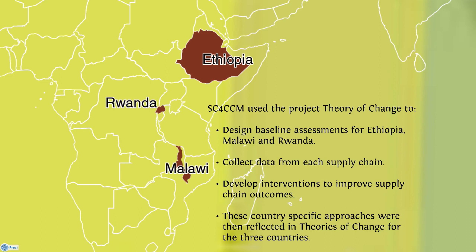SC4CCM used the project theory of change to design baseline assessments for Ethiopia, Malawi, and Rwanda, collect data from each supply chain, and develop interventions to improve supply chain outcomes. These country-specific approaches were then reflected in theories of change for the three countries. While all the theories of change aim to achieve the same objective, the country-specific ones have variations in steps that constitute the causal pathways necessary to achieve that objective.